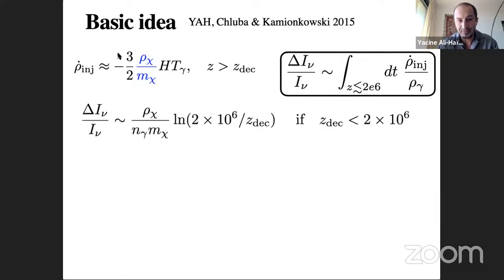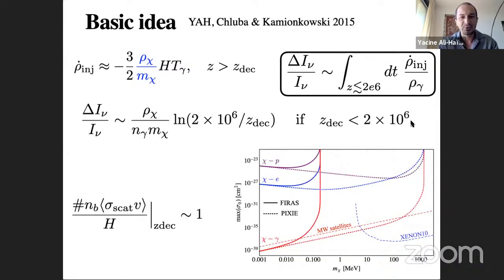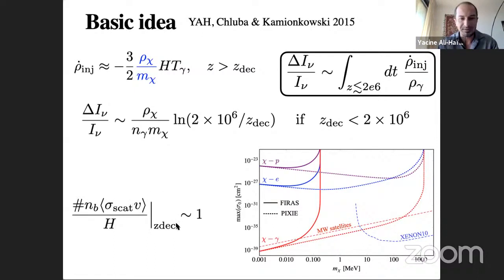If the dark matter is in tight thermal equilibrium with the plasma, the fractional spectral distortion is of order the ratio of the dark matter number density (∝ 1/m_χ) to the photon number density, times a logarithm of redshift 2 million over the decoupling redshift. This works only if the decoupling redshift is late enough. Finding the decoupling redshift depends on the microphysical elastic scattering cross-section.